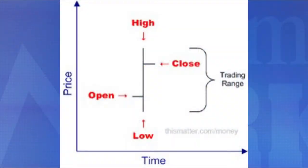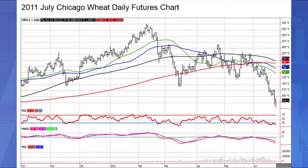Bar charts come in daily charts or continuation charts. The bar chart depicts the high price, the low price, the opening price, and the closing price. The high and the low are linked by a vertical line. The open is depicted by a horizontal line to the left and the close by a horizontal line to the right. Each bar therefore represents the high, low, open, and close — known as the trading range. Here's an example: the July 2011 Chicago wheat daily futures chart, where each individual vertical line is the high, low, and close for that day, and you can see it starts to create patterns over time.